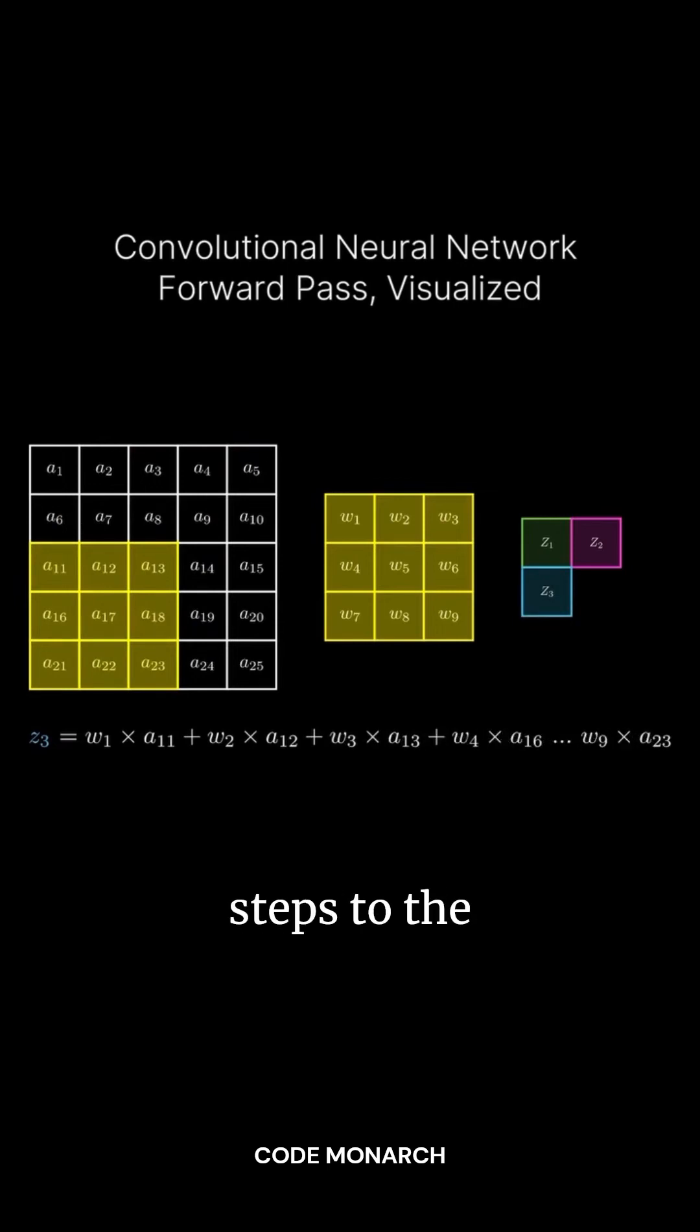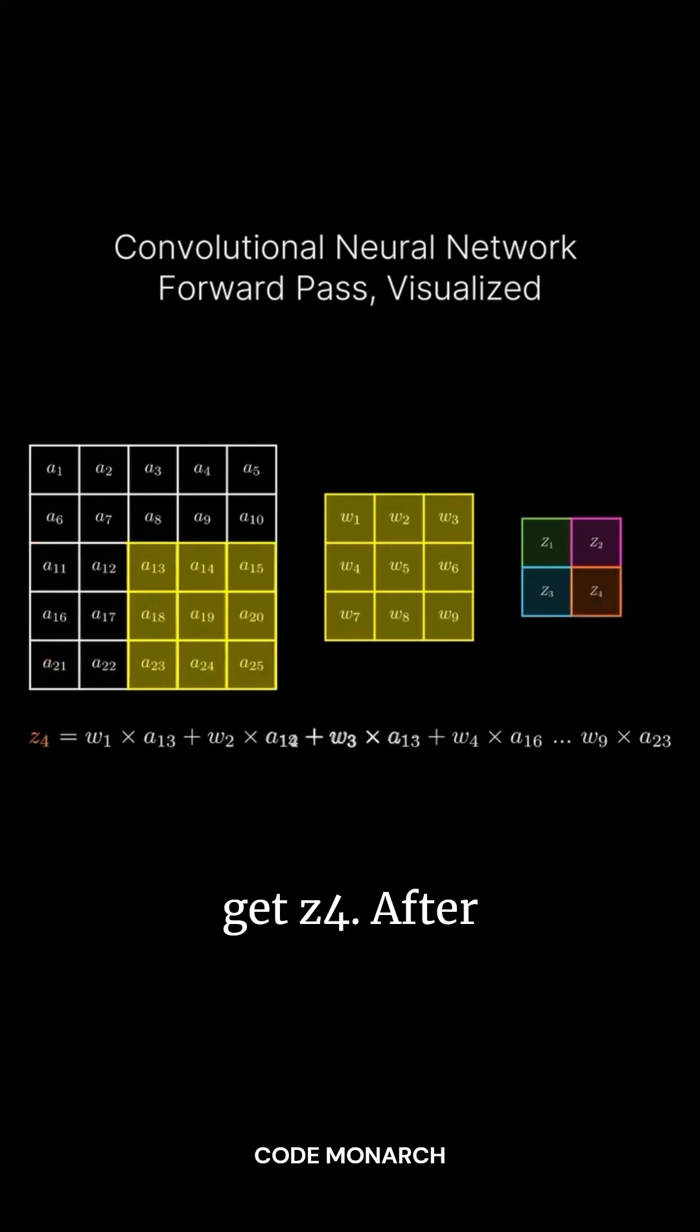We slide the kernel two steps to the right again to get Z4. After repeating this process, we end up with an output matrix, known as the feature map.